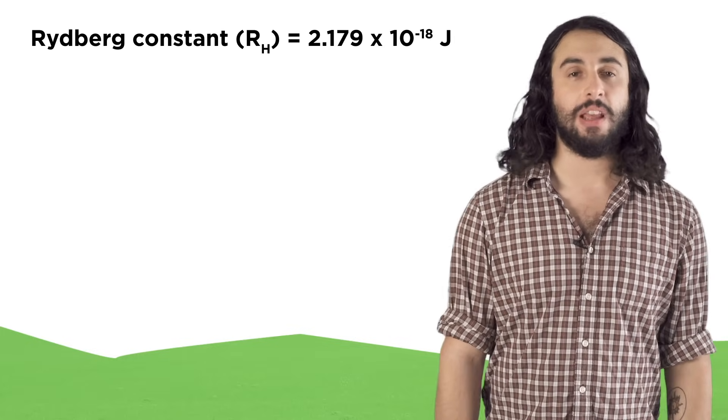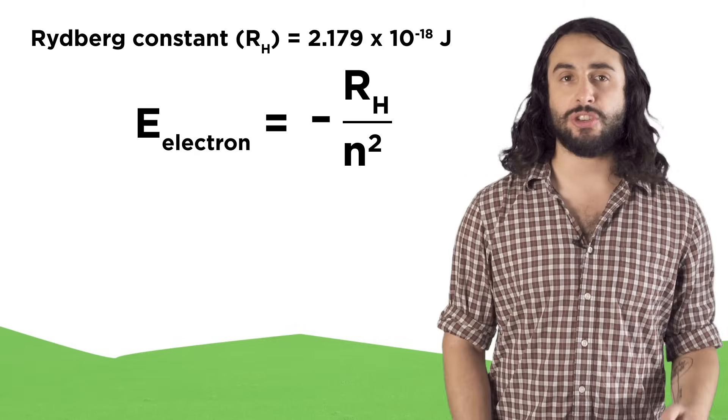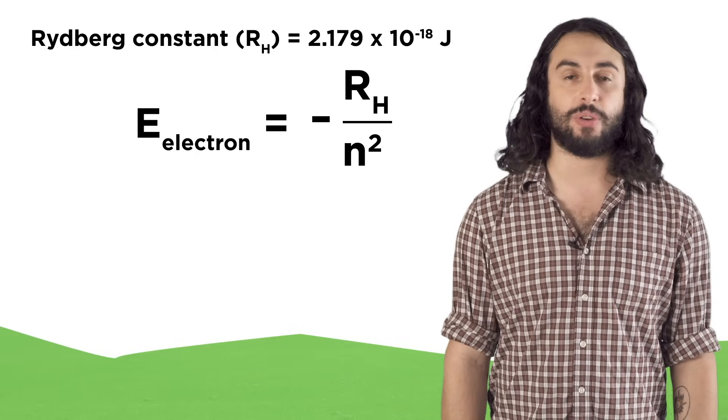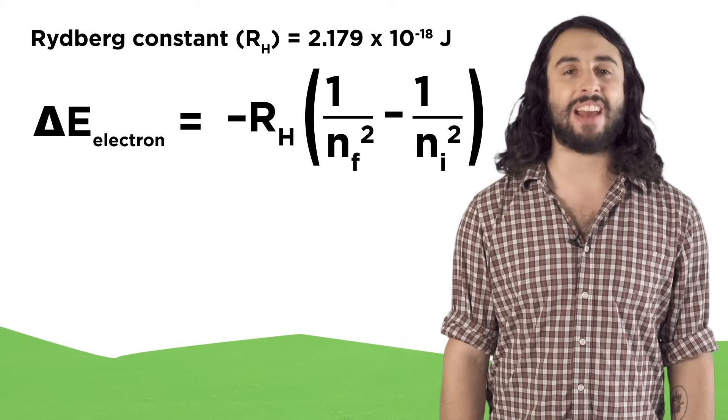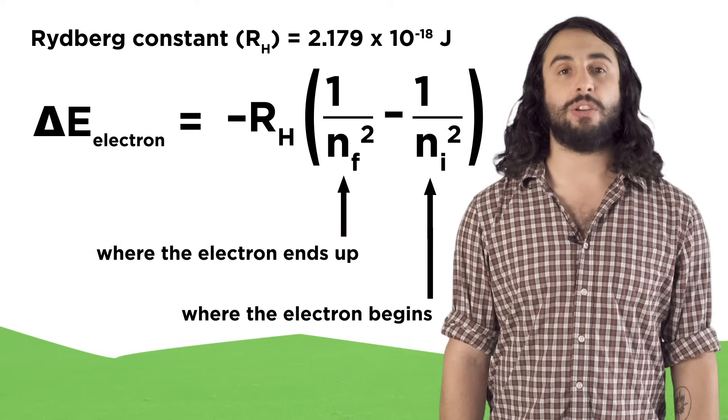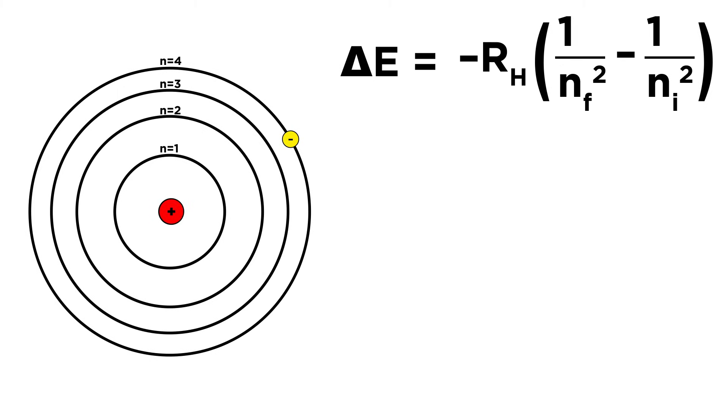For a hydrogen atom the energy levels depend on the Rydberg constant and are given by the following equation. But we typically just measure the change in energy of an electron during a transition so we can modify this equation to include the change in the energy level. n final is where the electron ends and n initial is where it begins. Using this equation we can predict the wavelength of photon associated with any possible transition for the hydrogen atom.